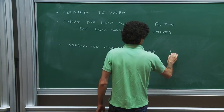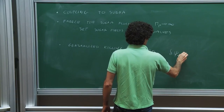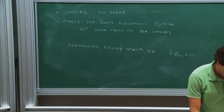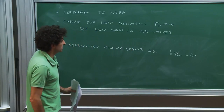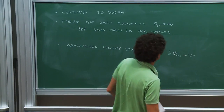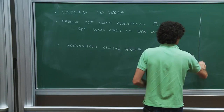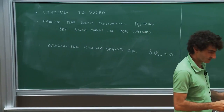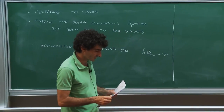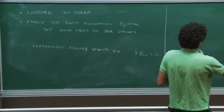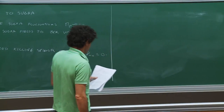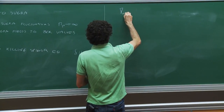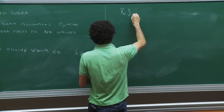These come from setting the variation of the gravitini to be equal to zero. We also introduced one example for N=1 theories in four dimensions which possess a Ferrara-Zumino supercurrent multiplet. Then we can couple them to what is called old minimal supergravity. The generalized Killing spinor equations in this particular instance have the following form — I'm only going to write one.